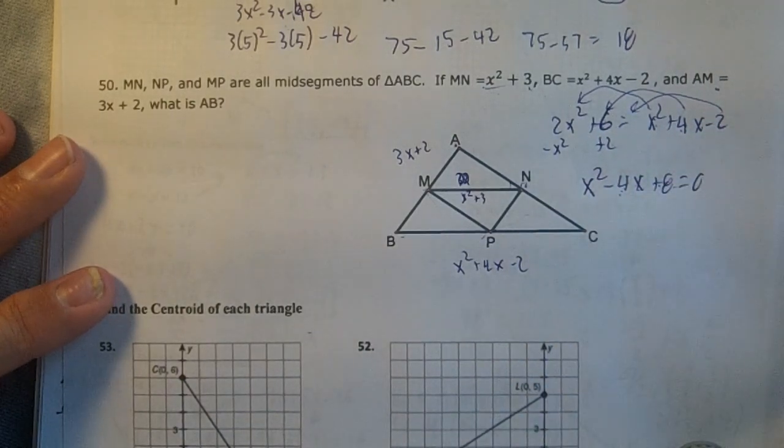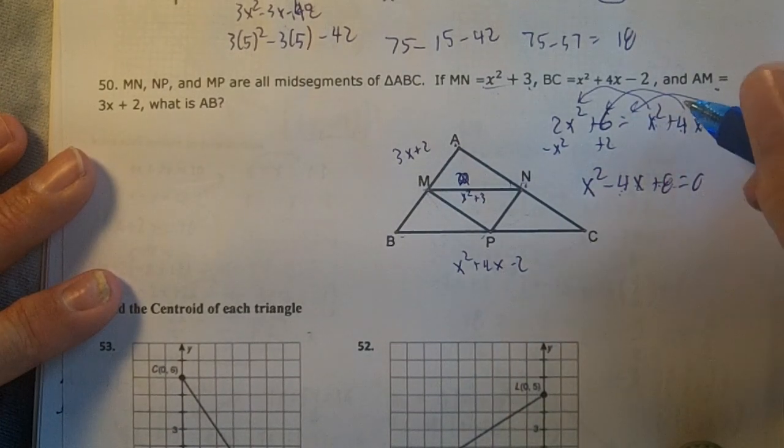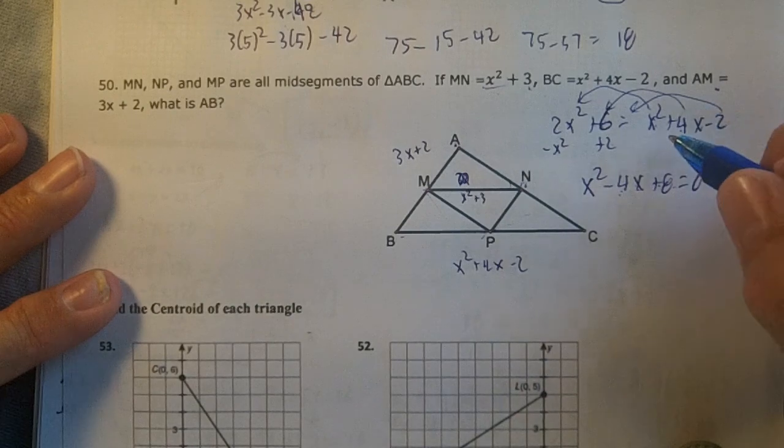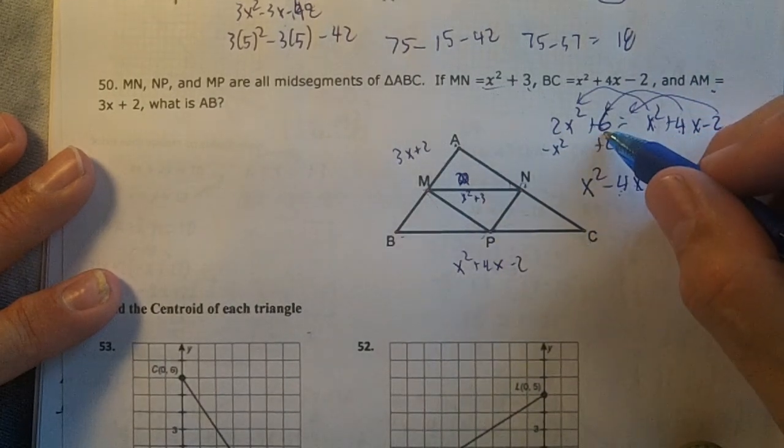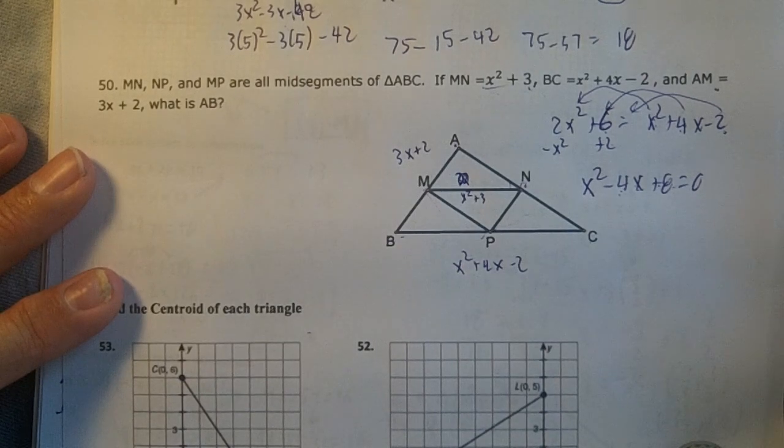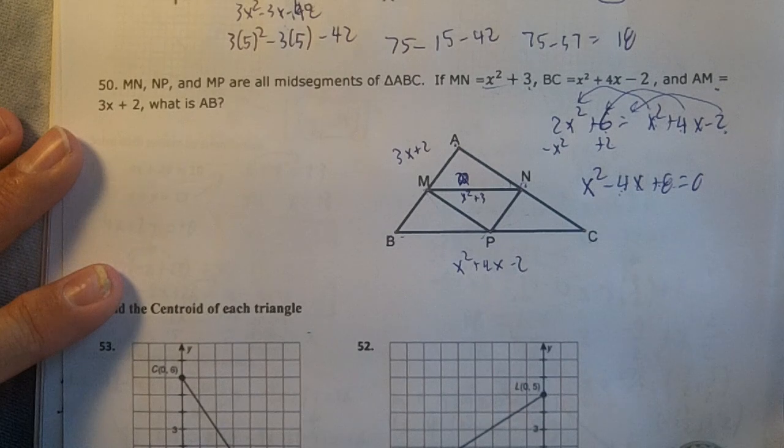Factors of 8 that add up to 4—that won't work. Looking at 2x² + 6 and x² + 4x - 2, this won't factor.